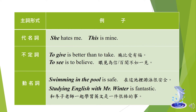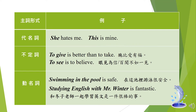接著我們看動名詞。動名詞可以是一個字，也可能是一個片語，所以也可能是動名詞片語的形狀。第一個例句：Swimming in the pool is safe，在這個泳池裡面游泳是安全的，這個句子的主詞是動名詞片語 swimming in the pool，is 是動詞，safe 是補語。第二句：Studying English with Mr. Winter is fantastic，主詞同樣是動名詞片語 studying English with Mr. Winter。